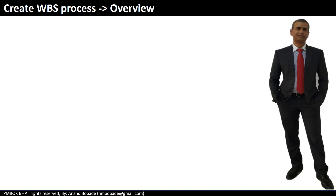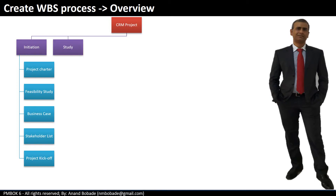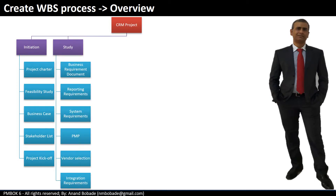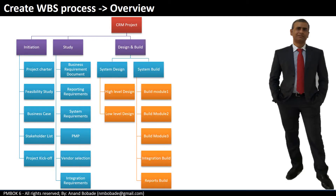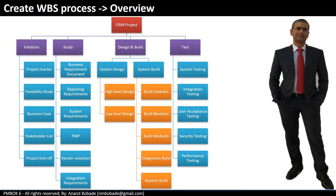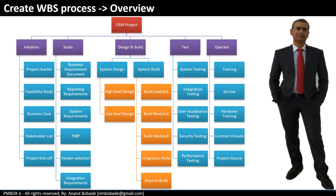Let's take a look at WBS in the picture. This is a WBS for a CRM project — CRM stands for customer relationship management — decomposed based upon project phases. The initiation phase has a project charter, feasibility, and business case. In the study phase, detailed requirement gathering and planning is done. In design and build, system design is done and the system is progressively built, with the complete build divided into five modules. In the testing phase, the system goes through system testing, integration testing, and business acceptance. Finally, in the operate phase, user manuals are prepared, training is given, and the application is handed over to the operations team.